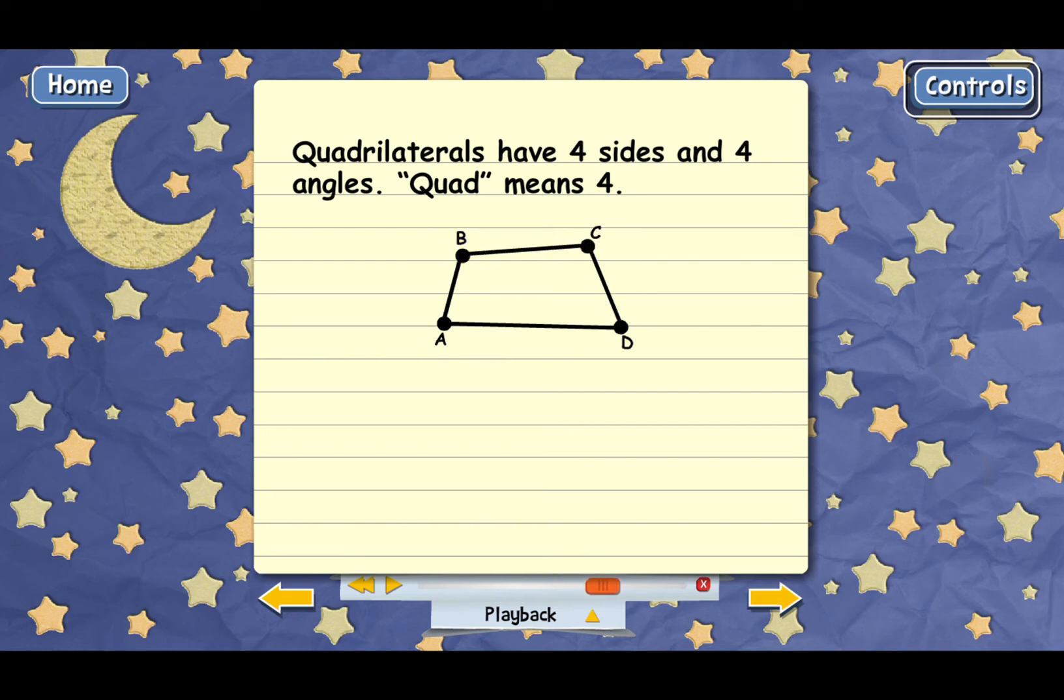We can use these letters to name the quadrilateral. This is quadrilateral ABCD. Now quadrilaterals can also be of all different shapes and sizes. Here are a few more. Notice that every one of these has four sides and four angles. That's how we know that they're quadrilaterals.